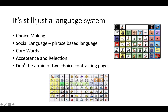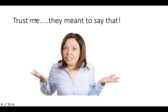Remember, it's still a language system. We can get super caught up in the eye gaze system, but we are here to teach language — choice making, social language, core words, teaching acceptance and rejection. Don't be afraid of two-choice contrasting pages, pages with 'more' and 'all done,' pages that are very simple, and moving up to very complex. Trust me, they meant to say it. One thing we need to do is teach that they are using their voice and that we are going to react accordingly. If they make a choice, we don't say 'did they mean to say that?' — we say 'you picked bubbles, I'm going to blow bubbles.' And if the student gets mad because they didn't want bubbles, then they know it matters where they look. That's a teaching moment.